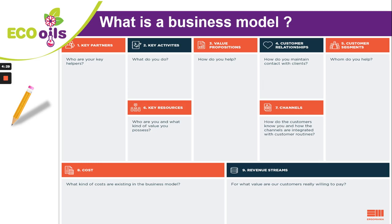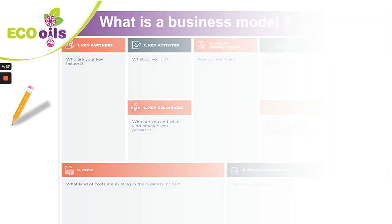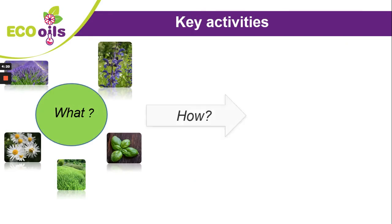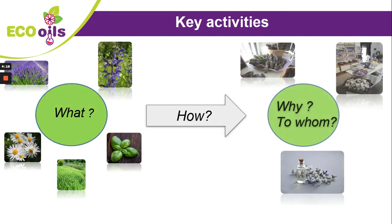The Business Model Canvas is composed of 9 parts. First, key activities. We are talking about all activities of production and product transformation. It depends on which kind of aromatic plant you will plant.